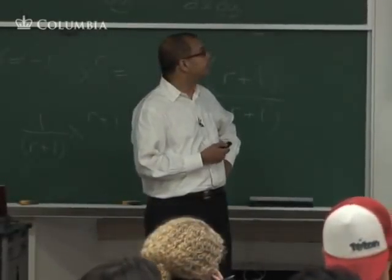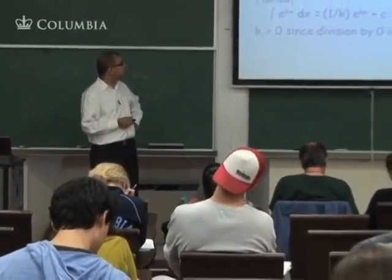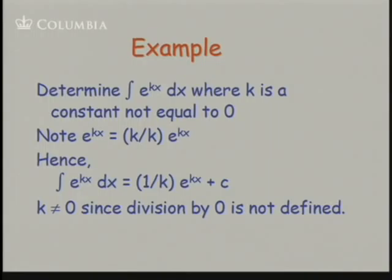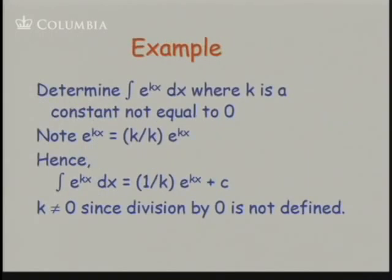Here's an example with the exponential function. Let's work through this. We want to find the antiderivative of e to the kx, where k is a constant not equal to 0.